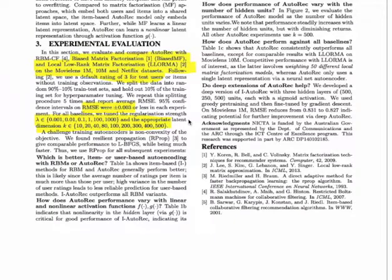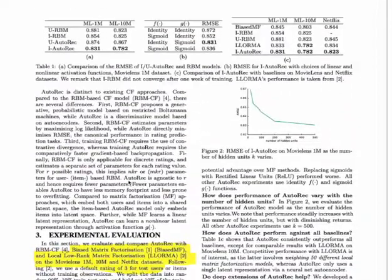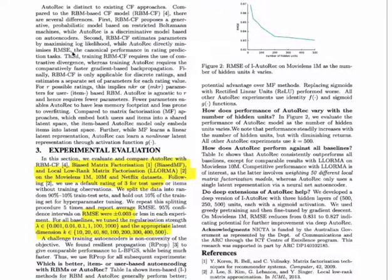Also, we have given a couple of follow-up questions. Things like which is better: item or user level autoencoding? So over here, as you can also see in the table, item level autoencoder method is able to perform better.